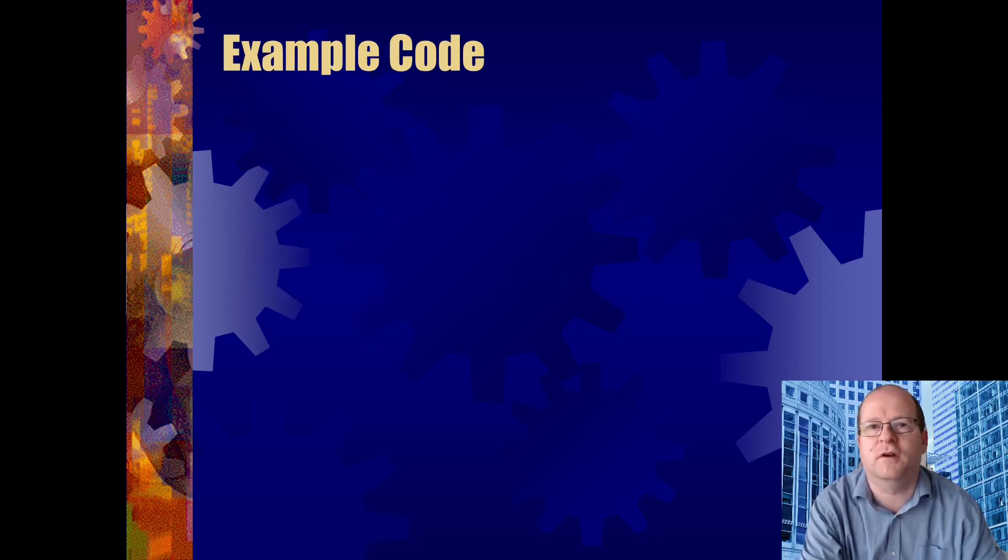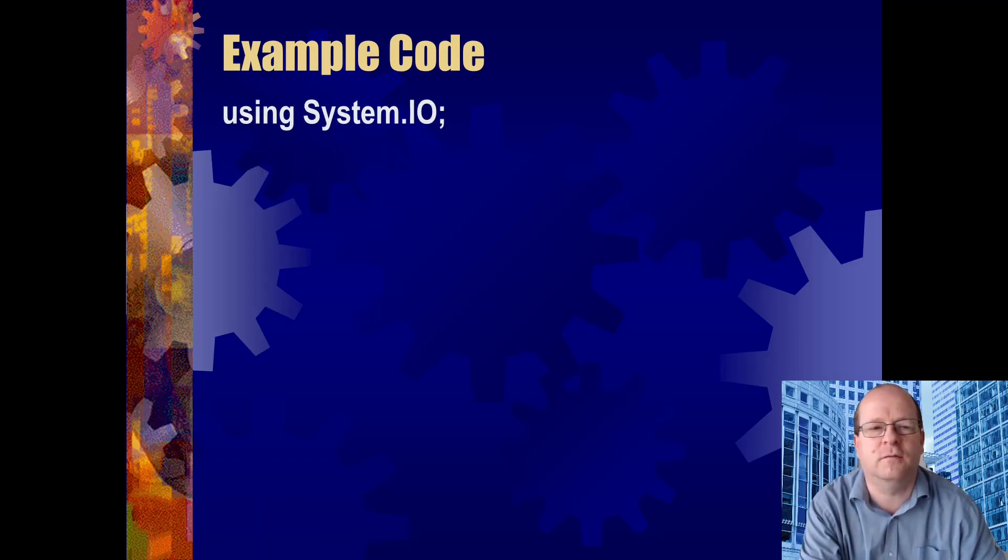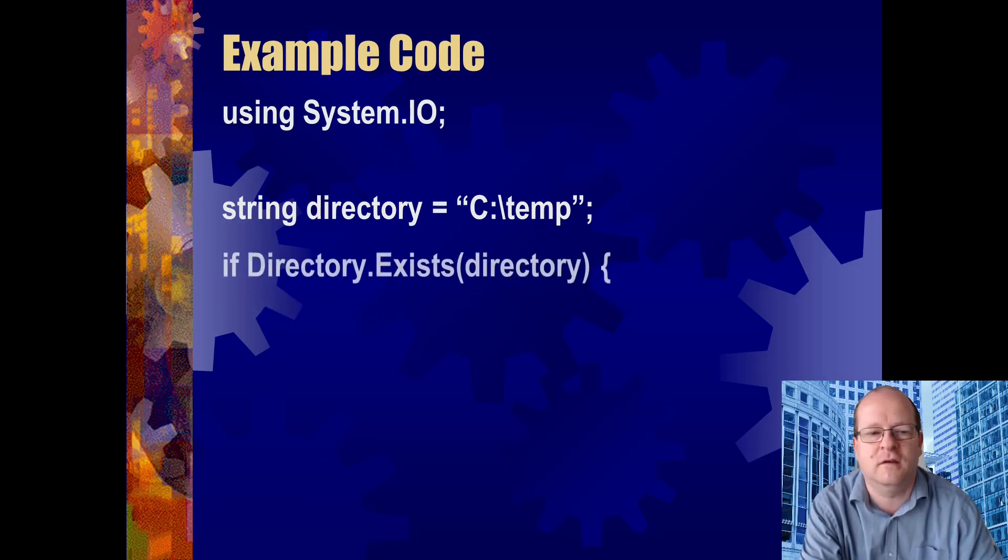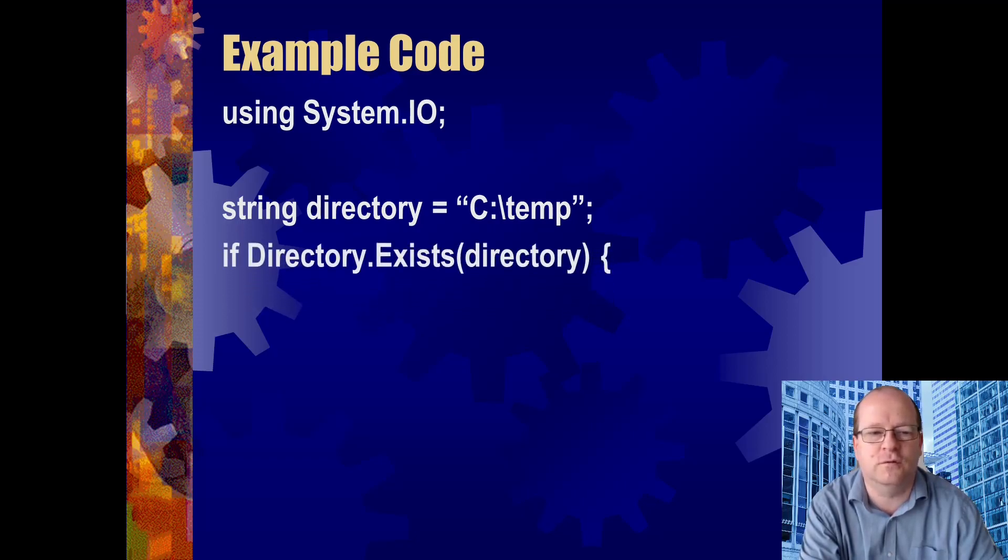Here's some example code for finding out if a directory exists. So we include using System.IO, so the System.IO namespace is used. We make a string object with the directory name we want to check if that exists. So we just call Directory.Exists passing in as a parameter the directory name.